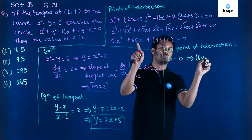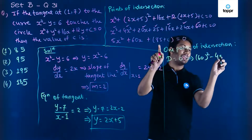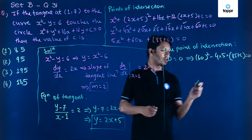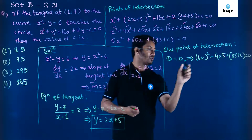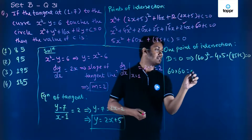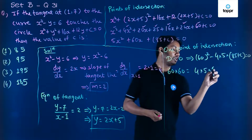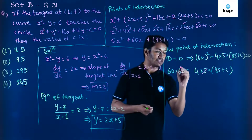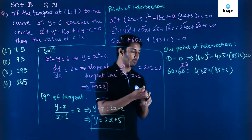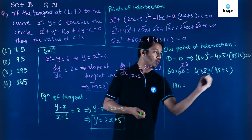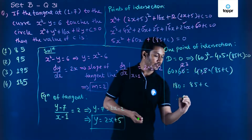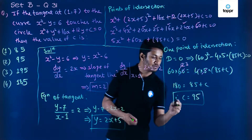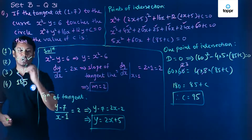So b squared is 60 squared, minus 4 times a (which is 5) times (85 plus c) equal to 0. Solving: 60 squared equals 4 into 5 into (85 plus c). Since 4 into 5 is 20, and 60 squared divided by 20 gives 180, we get 180 equal to 85 plus c. Therefore the value of c is 180 minus 85, which equals 95. So 95 is the answer, which is option number 2.